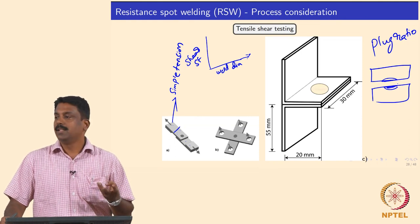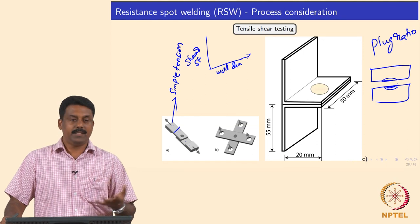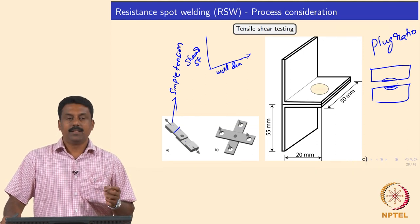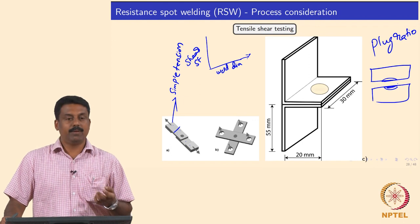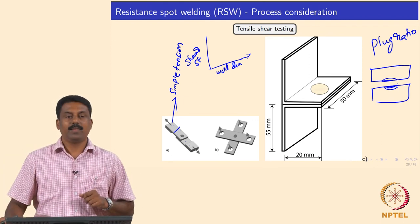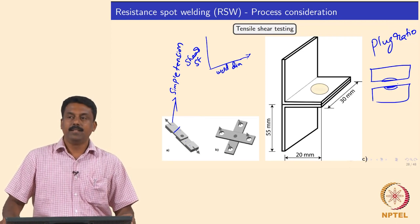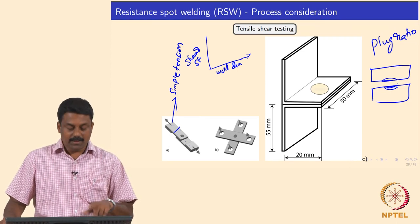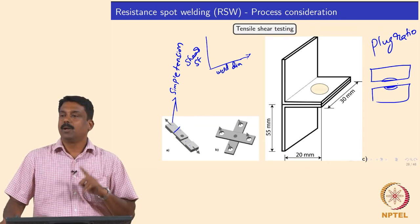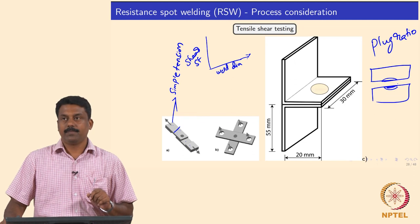If the weld center line is completely embrittled — because alloying elements segregate there — what happens when you apply load is complete interface failure. So we identify both the strength required to break anywhere and the plug size, and both combined give us the mechanical properties of the resistance spot weld.